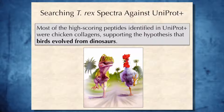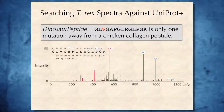Azara also included some mutated versions of collagens from present-day species — we will call this the augmented database UniProt+. Afterwards, Azara searched all T. rex spectra against the UniProt+ database, and it turned out that most of the high-scoring peptides identified in UniProt+ were chicken collagens, or were very similar to chicken collagens, supporting the hypothesis that birds evolved from dinosaurs.